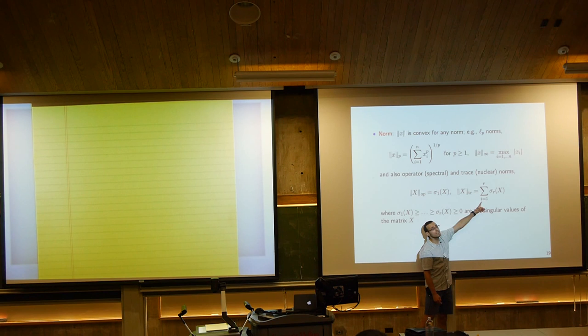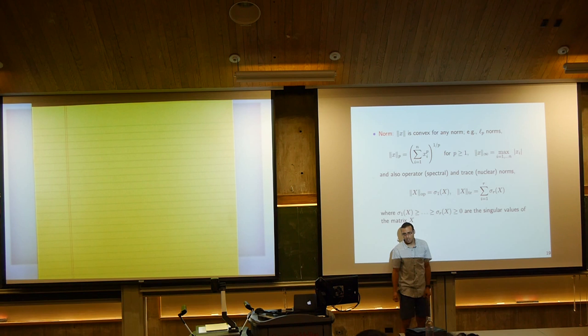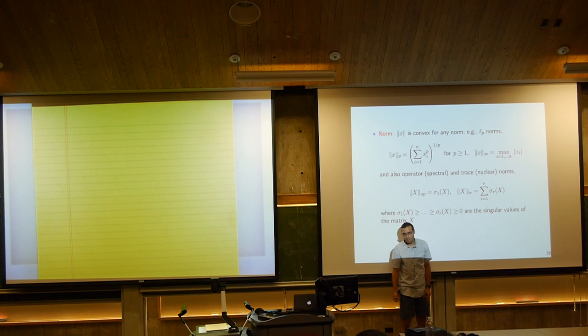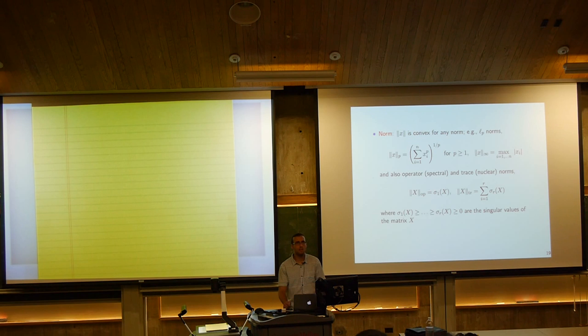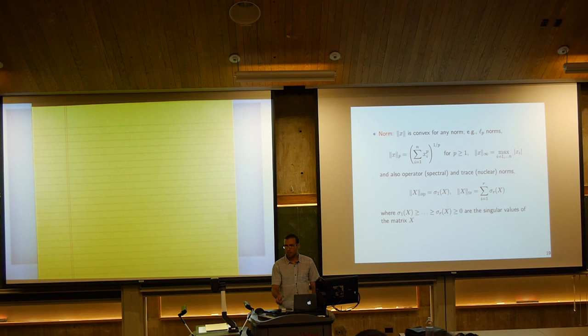The trace norm is the sum of the singular values. These two norms — the operator norm and the trace norm — are dual norms of each other, just as LP norms have dual norms. We'll define this precisely later. These become important when we discuss SDP programming and machine learning applications like matrix completion.